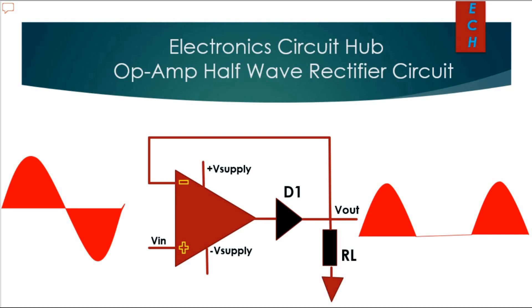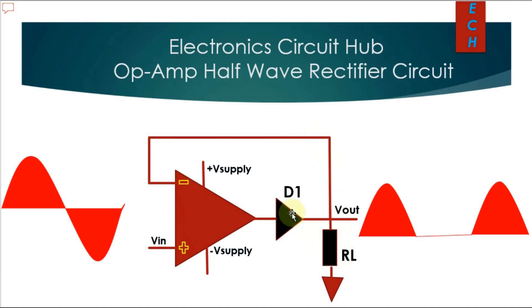This is the basic circuit of the op-amp half-wave rectifier. This is a 50 Hz sine wave signal input connected to the non-inverting terminal — the plus terminal of the op-amp — and the minus terminal is connected to the output. RL is the load, and D1 is the diode connected between the output terminal of the op-amp and V-out.